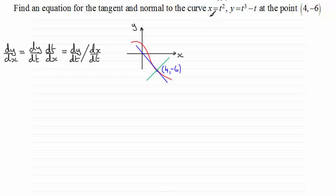So let's start with dx by dt. If we differentiate t squared with respect to t we'll get 2t. And for dy by dt, if we differentiate t cubed minus t we get 3t squared minus 1.